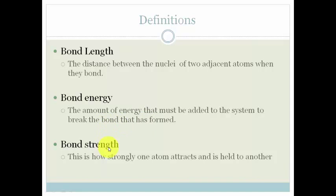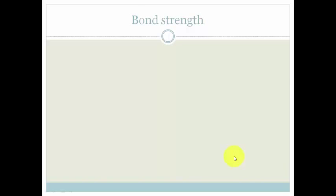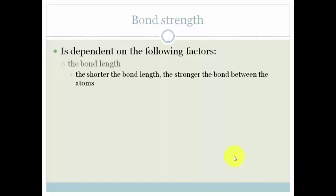Bond strength is how strongly one atom attracts and is held to another. So bond strength is dependent on a couple of things. First of all, the bond length. The shorter the bond length, obviously then the closer the atoms are to each other, and therefore the stronger the bond is between the atoms.